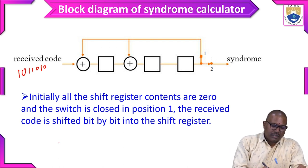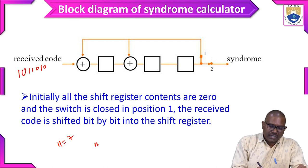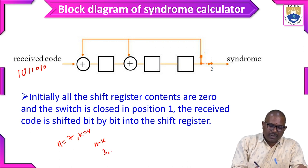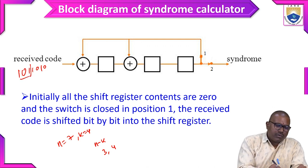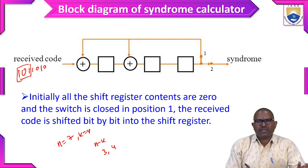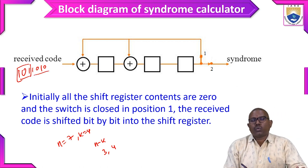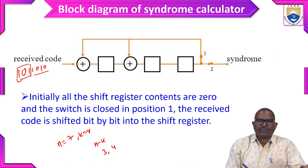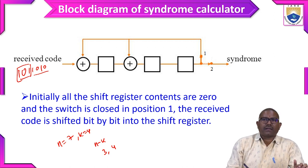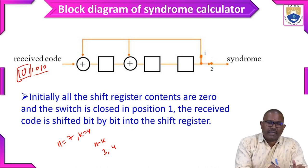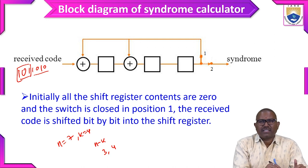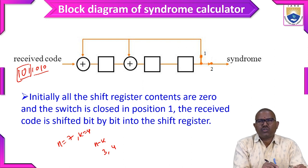Generally for n equals 7 and k equals 4, there are 3 parity bits and 4 message bits. The first 3 bits can be treated as parity bits and the remaining 4 bits as message bits. The error will be generated in these 3 parity bits. When the error is detected, the syndrome value shows as 1; if there is no error, it is 0.